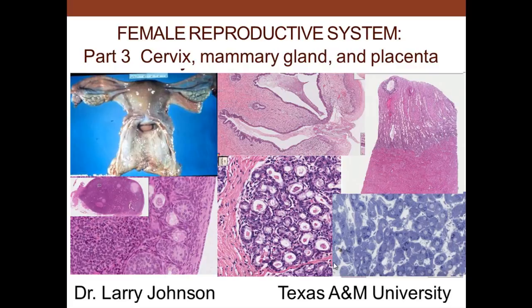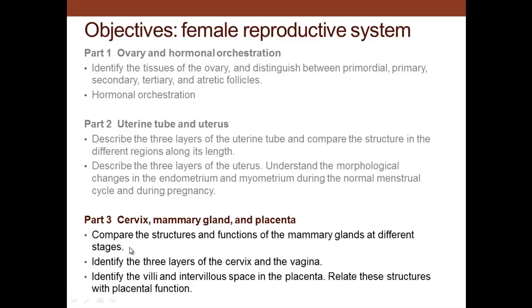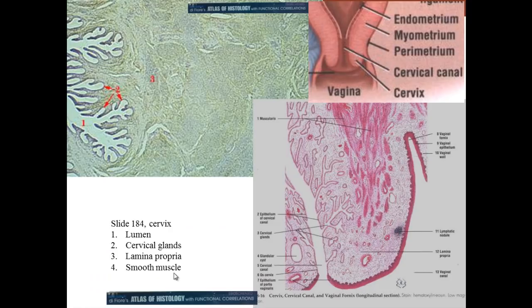We want to compare the structures and functions of the mammary gland in different stages of activity. We'll identify the three layers of the cervix and the vagina, and we want to identify the villi and intervillous spaces of the placenta and relate these structures to placental function — that is what we want to do today.